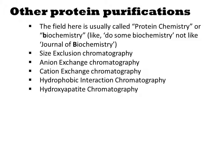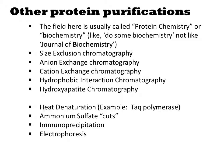Anion and cation exchange separate proteins by charge. Hydrophobic interaction chromatography separates the proteins that have hydrophobic residues on their surface. There are also some more specific resins like hydroxyapatite. This mineral of apatite and phosphate mimics nucleic acids and will sometimes selectively bind proteins that bind RNAs and DNAs.